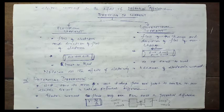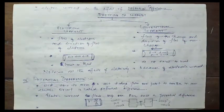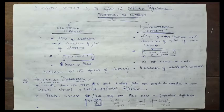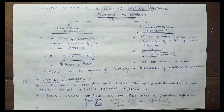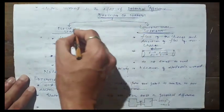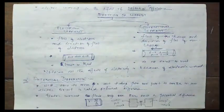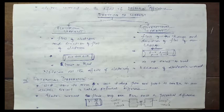Before we move on to potential difference, let's understand the direction of current. I mentioned that electric current is a scalar quantity — we are not interested in its direction. So why are we talking about current's direction? It's important to understand that electric current has two important directions: one is called electronic current, and another one is called conventional current.